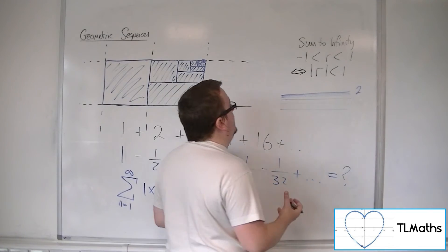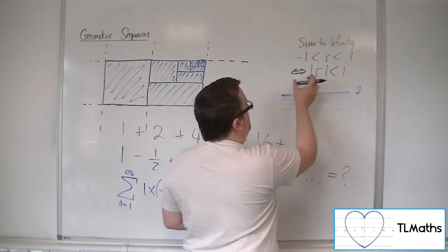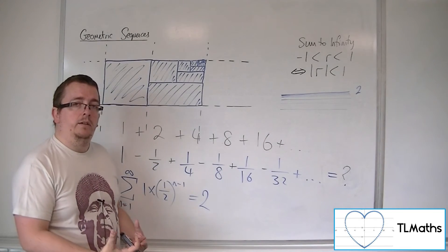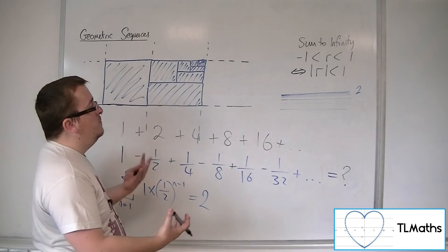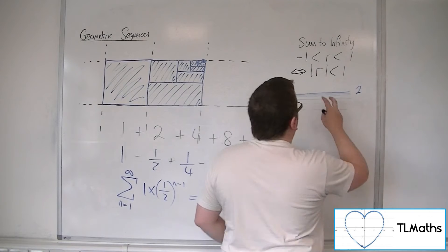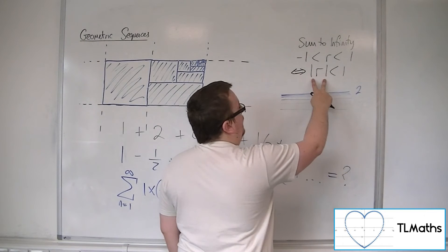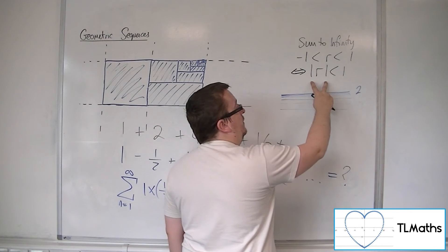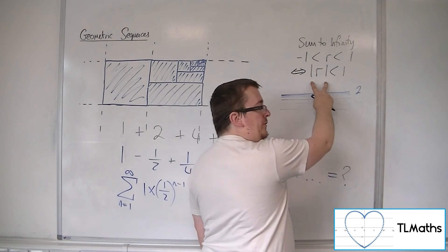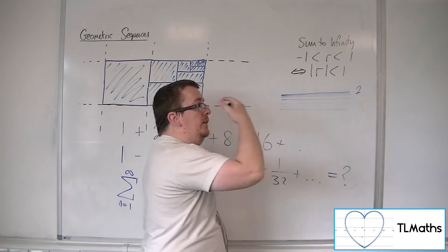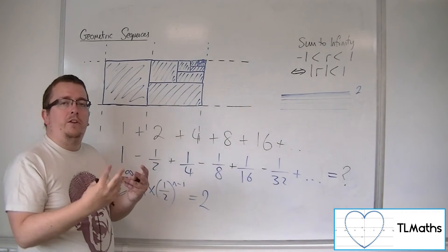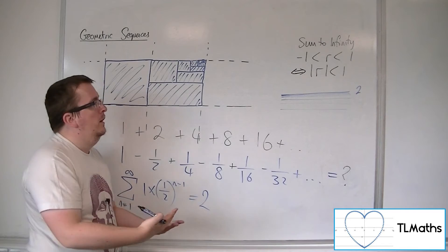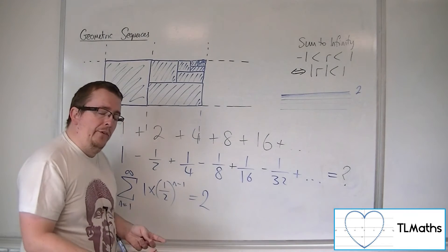The modulus sign, if you haven't met it before, means the absolute value of r. So if r was minus a half, then the modulus of minus a half is a half. It's saying that the absolute value — the size of r — must be less than 1.